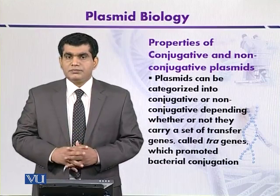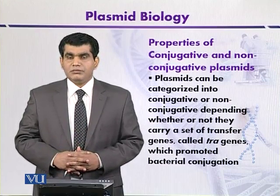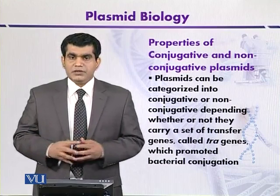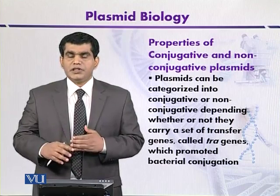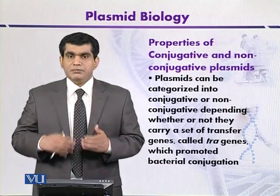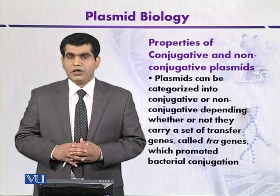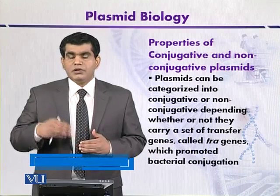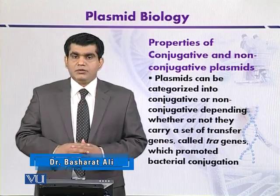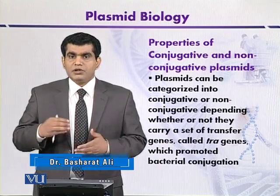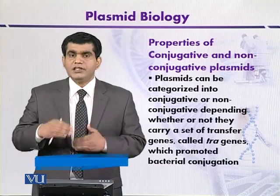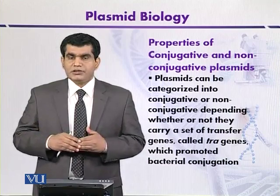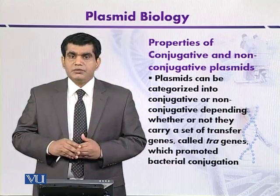This process is mediated by plasmids that contain a region of DNA called the tra region, which contains the genes that mediate the transfer of plasmid DNA from the donor to the recipient. Whereas those plasmids that don't contain tra genes to facilitate transfer are called non-conjugative plasmids.